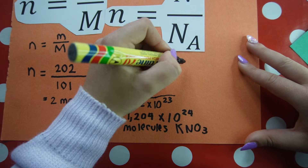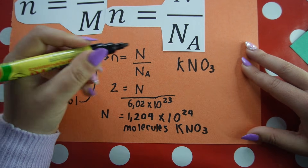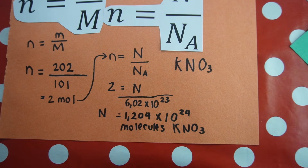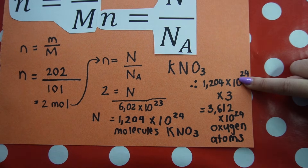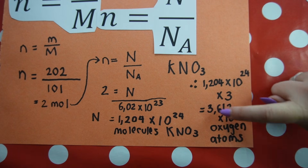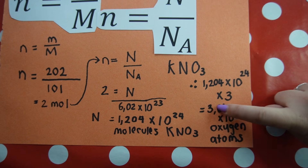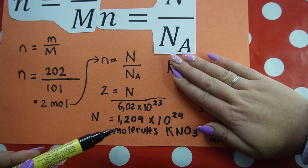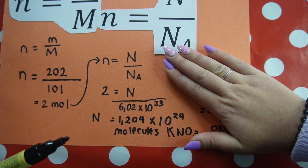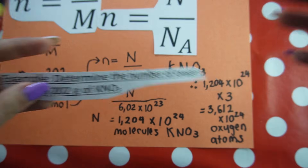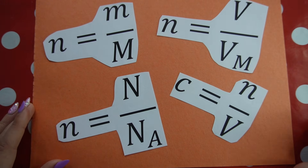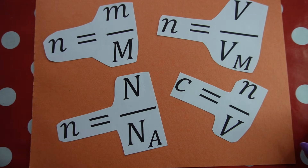Take your number of molecules and multiply by 3 — because each molecule has 3 oxygen atoms. So this many molecules times 3 gives your final answer: 3.612 times 10 to the 24 oxygen atoms. You would have stopped at the molecules step if the question asked for number of potassium nitrate molecules, but it specifically asks for oxygen atoms. In the other videos in my playlist, we look at how to calculate number of moles, as well as volume at STP and concentration of a solution. Check the links in the description for more stoichiometry, chemistry, and physics videos.